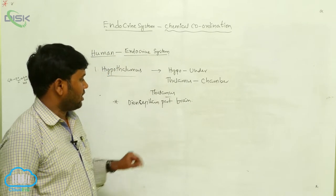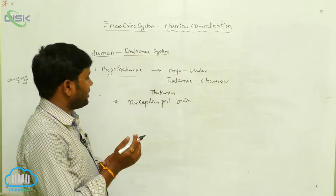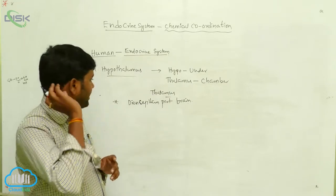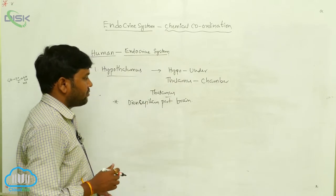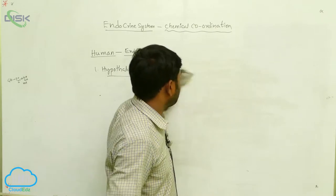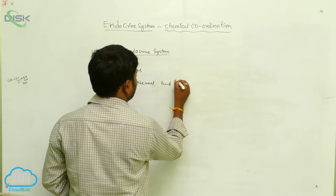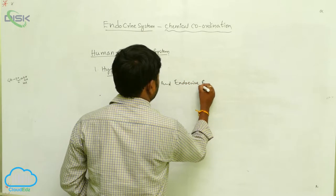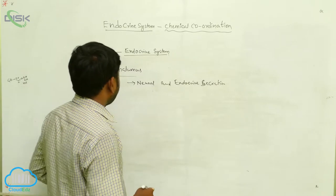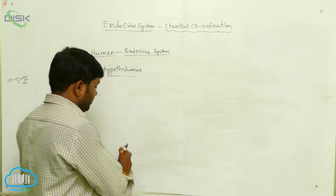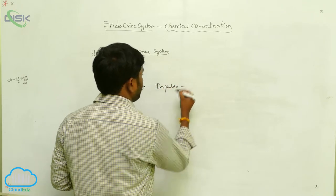The diencephalon is the anterior part of the brain. The hypothalamus is located under the thalamus, in the chamber of the diencephalon. The hypothalamus constitutes both neural and endocrine secretions.